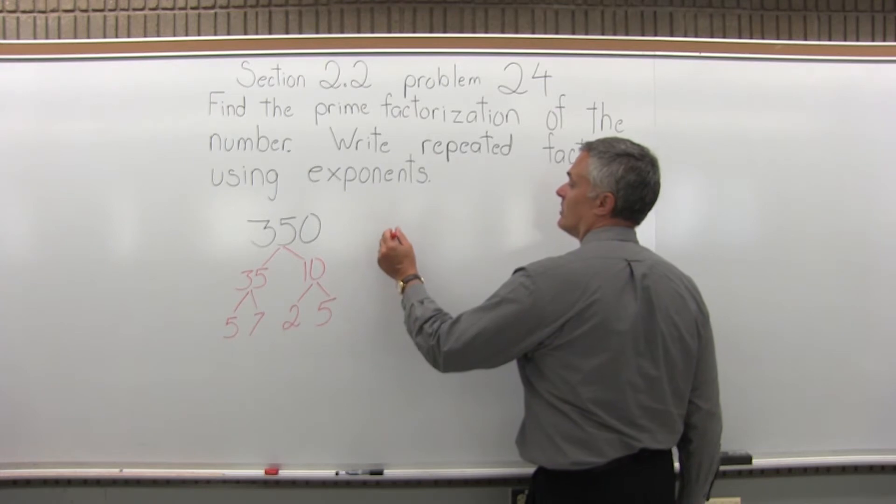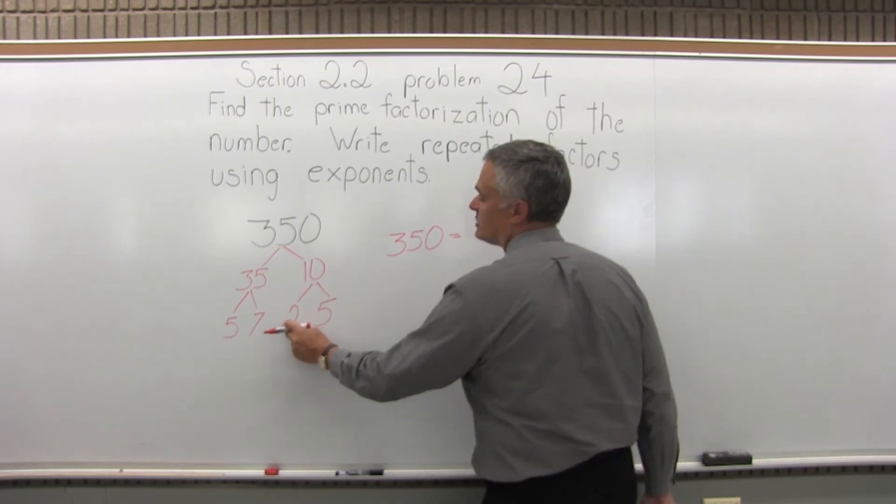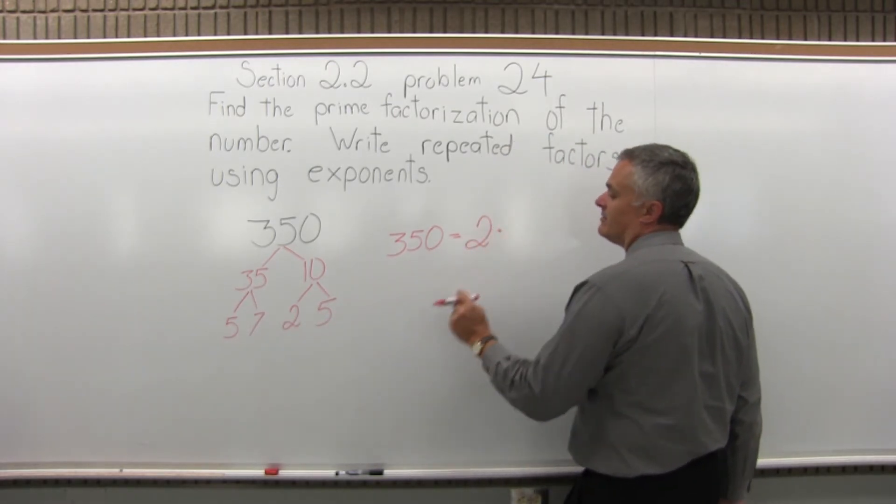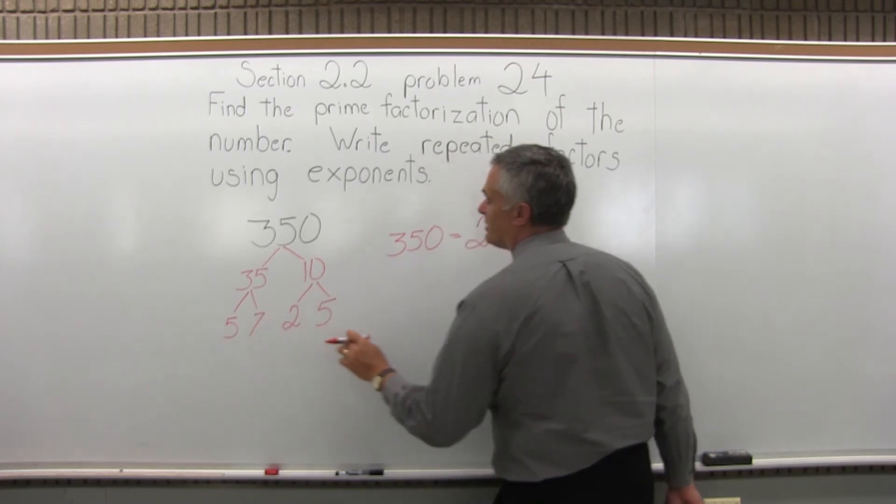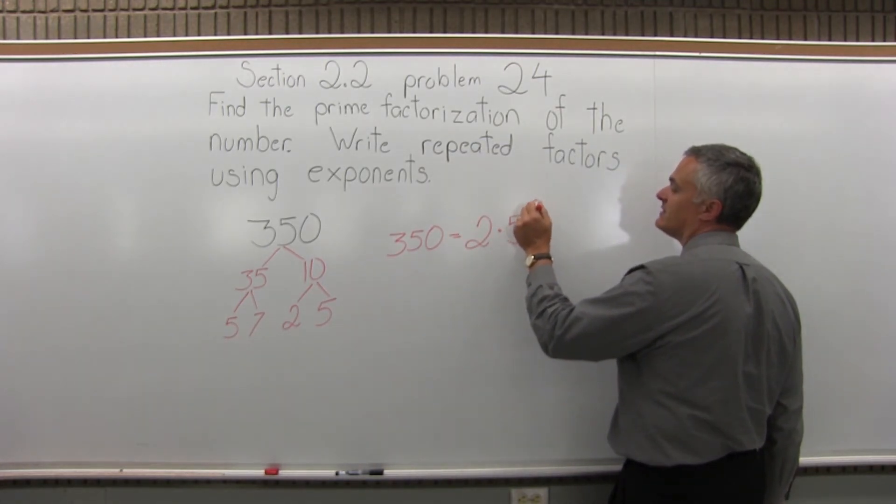So I will write 350 equals, and typically you start with the smallest prime, which is 2, times the next one, 5. It shows up in two spots, so to use exponents, instead of writing two 5s, I write 5 to the second power.